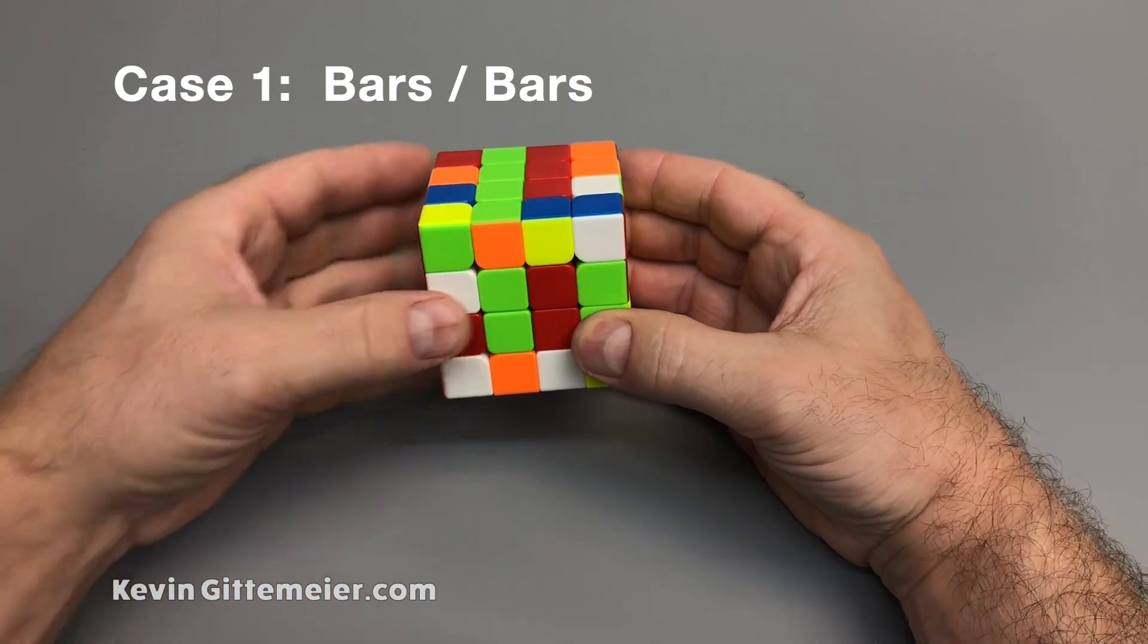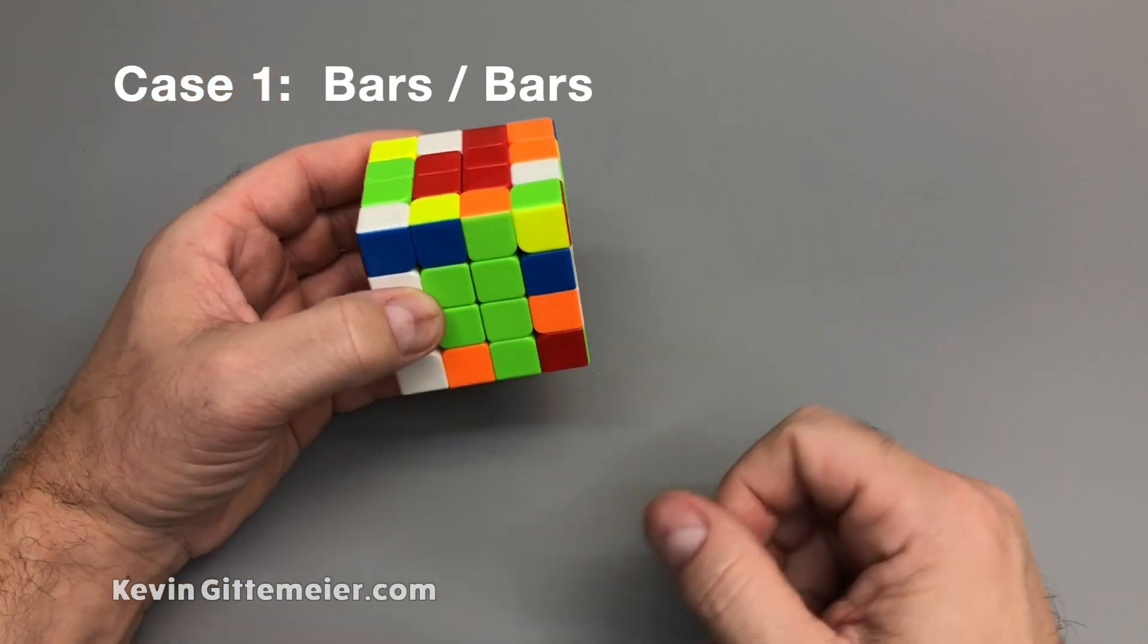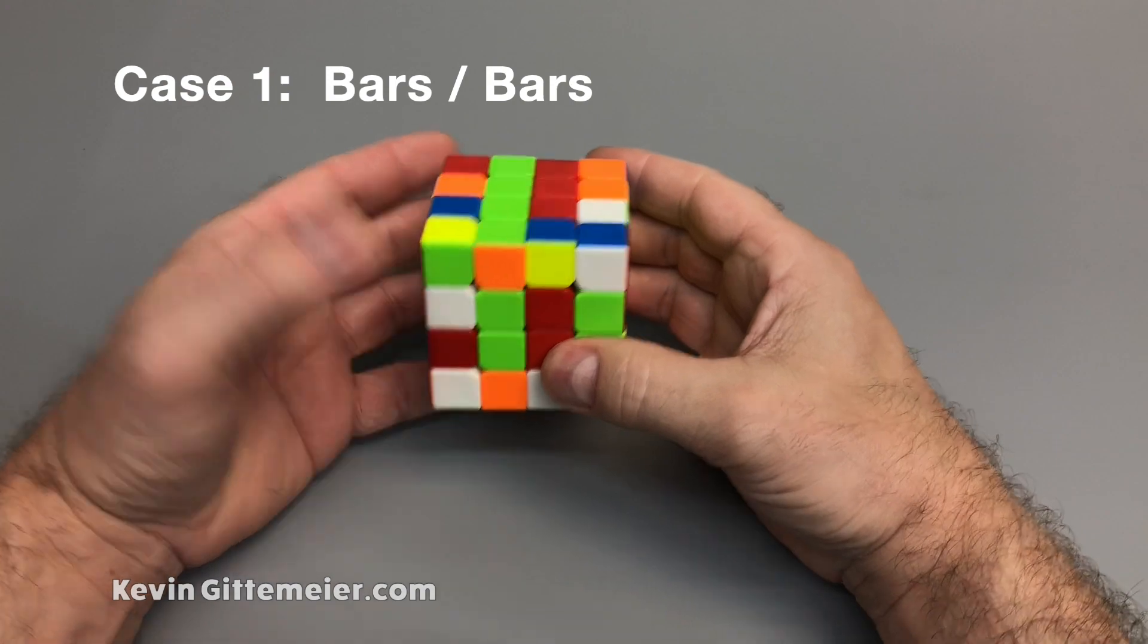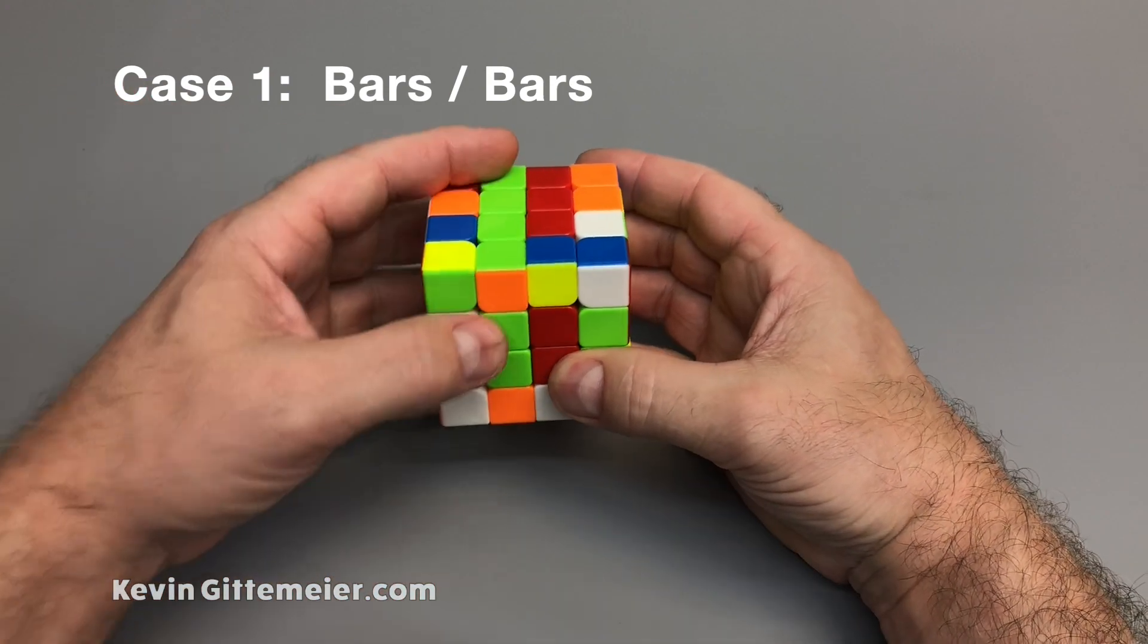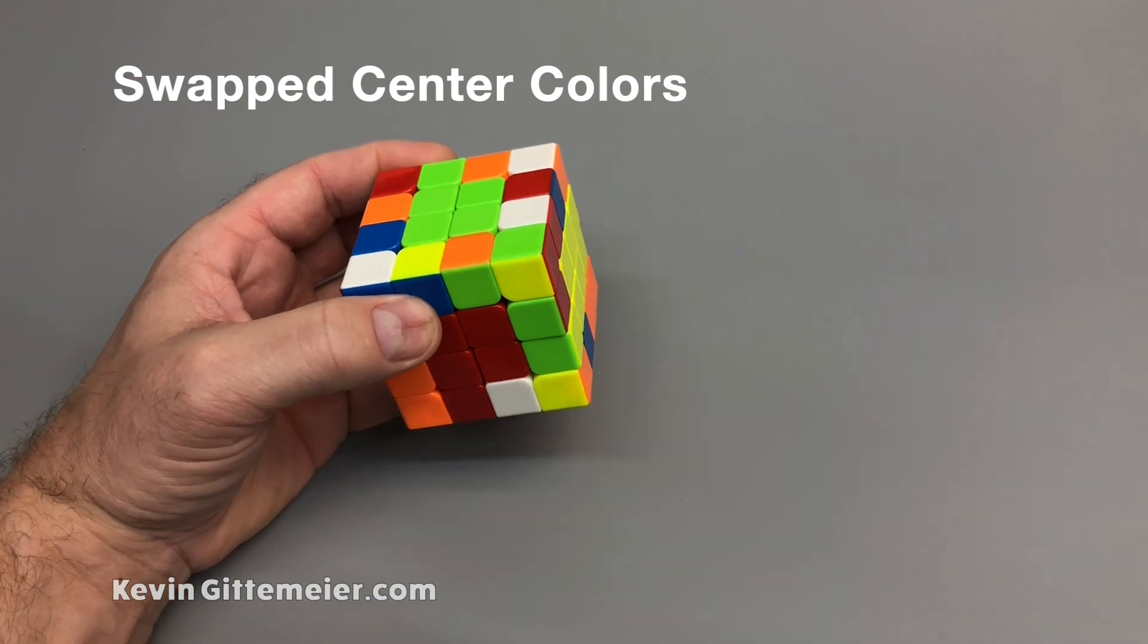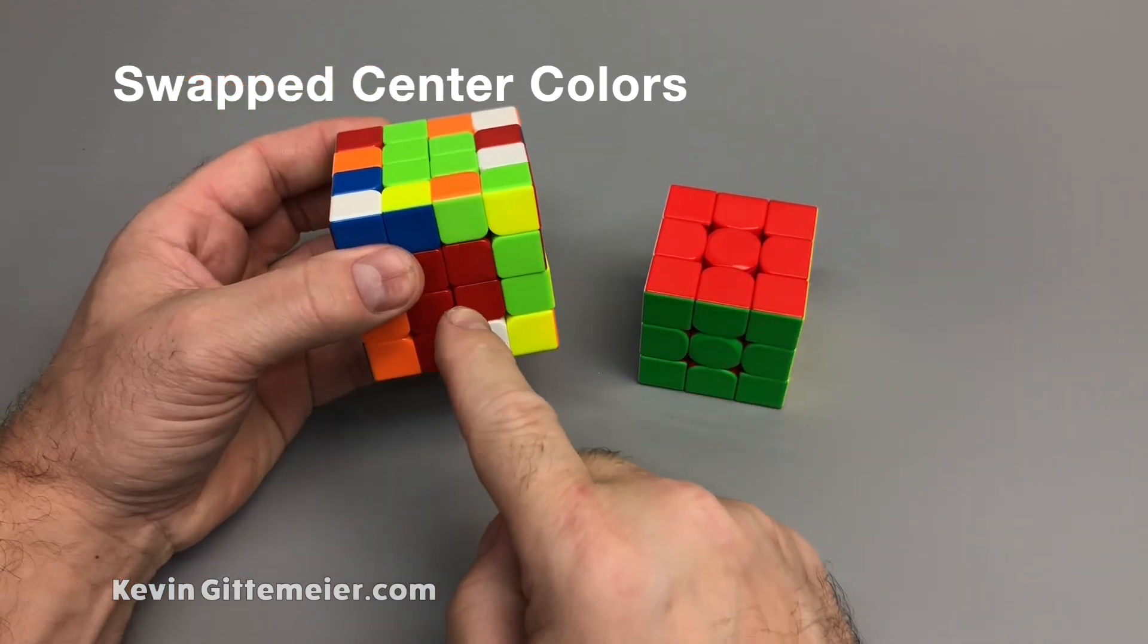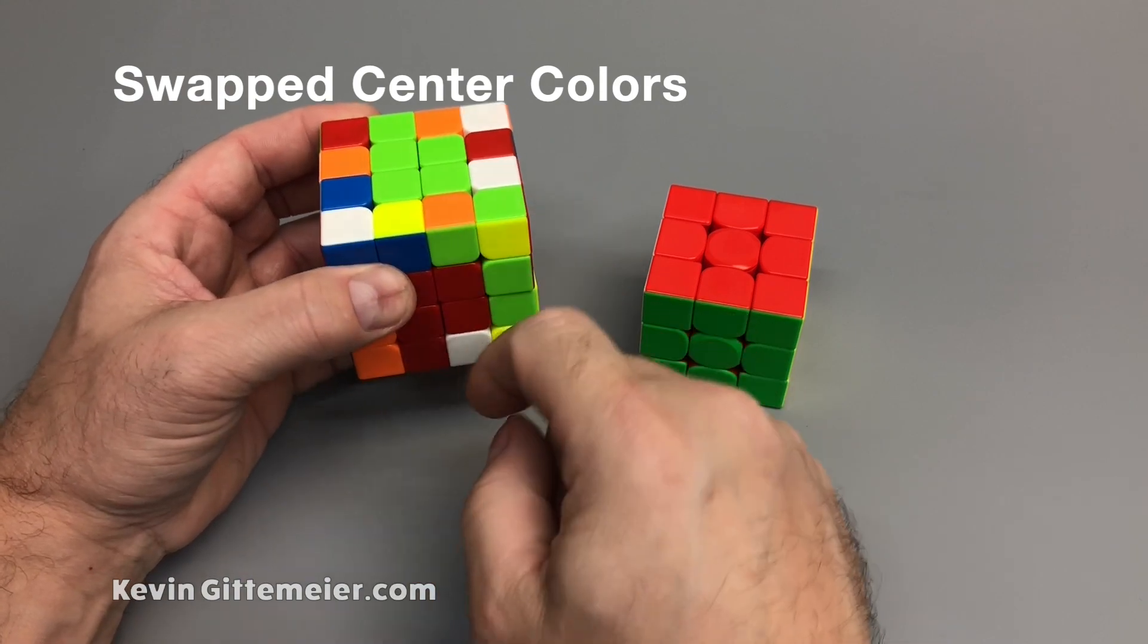Alternatively, we could slice the green down and accomplish the same thing, but we do have to be mindful of the color placement. So, for example, if I slice this green up, now my color pattern's wrong because blue, orange, green, red, not red, green.